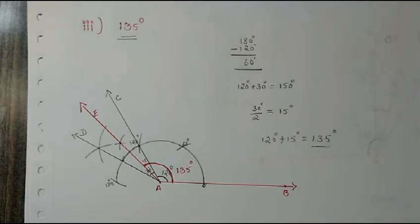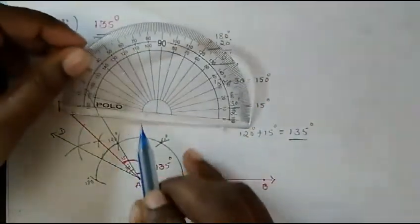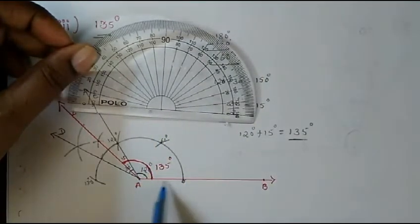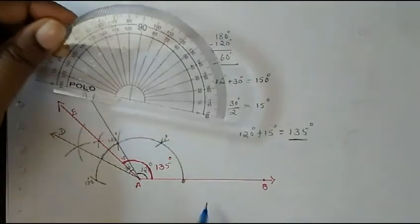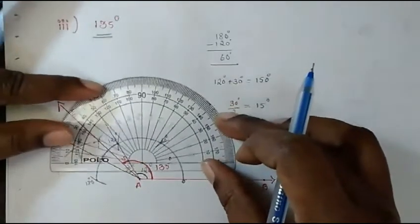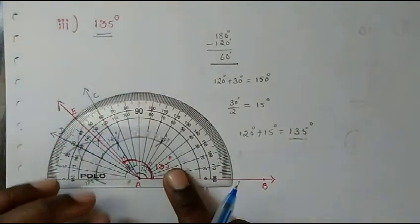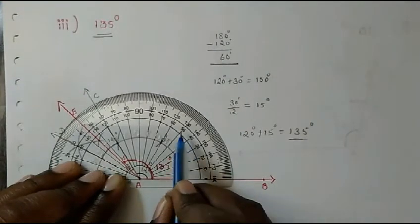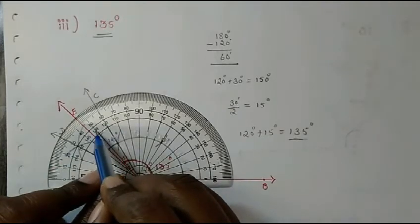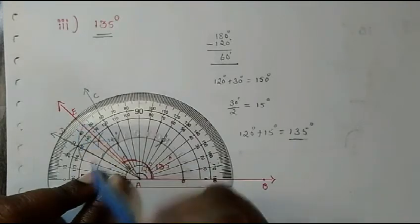Let us now verify with the protractor. Take the protractor — the center point should be on point A, and the baseline should fall on the red line. Zero is here, and we count from zero: 0, 10, 20, 30, 40, 50, 60, 70, 80, 90, 100, 110, 120, 130 — and 140. Exactly in the center between 130 and 140 it reads 135. So it is verified.